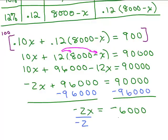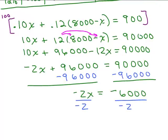Divide both sides by negative 2. Be careful here. Don't just divide by 2. First of all, it wouldn't make any sense. You can't put a negative amount of dollars in an account. So, what do we end up with? X is 3,000.